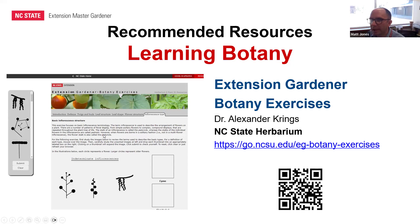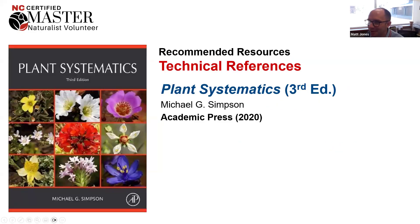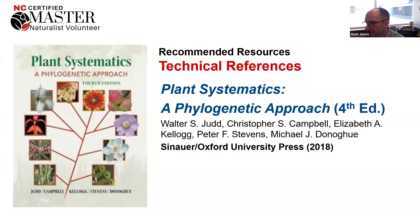If you want a more in-depth understanding of how plants are related to each other, the two textbooks I recommend are Plant Systematics by Michael Simpson—which has lots of excellent photographs—and Plant Systematics: A Phylogenetic Approach by Judd et al. Both are standard textbooks for a college-level plant systematics and taxonomy class.